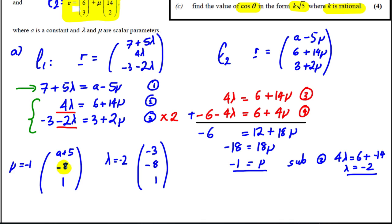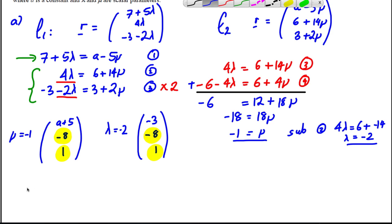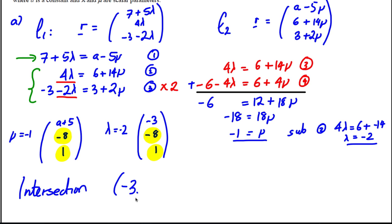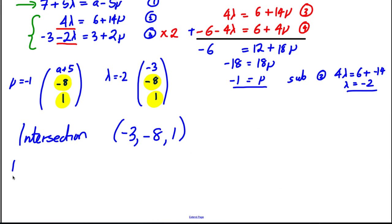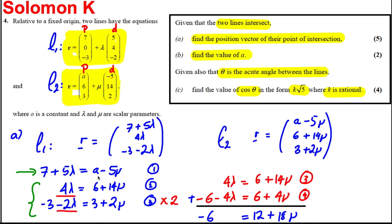The y and z coordinates match, confirming our calculation. Since these are position vectors, the point of intersection is (−3, −8, 1). For part b, since the x-coordinate must also match, a + 5 = −3, so a = −8.